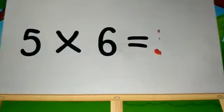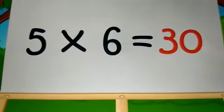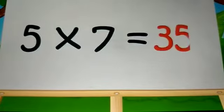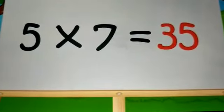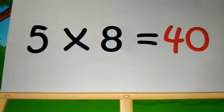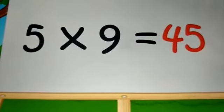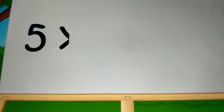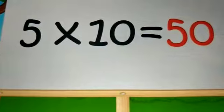5, sixes are 30. 5, sevens are 35. 5, eights are 40. 5, nines are 45. 5, tens are 50.